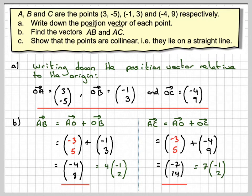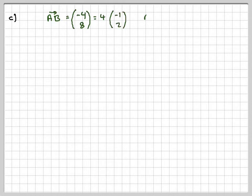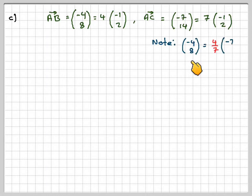And for part C, we've got to show that they're collinear, i.e. they lie on a straight line. If we write down all the information that we have so far, if we note that (-4, 8) is the same as doing 4/7 of (-7, 14).